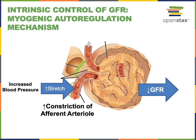The opposite occurs in response to low blood pressure: dilation of the afferent arteriole works to increase glomerular blood hydrostatic pressure, net filtration pressure, and GFR. In addition to stabilizing GFR, the myogenic autoregulation mechanism also protects the glomerular capillaries against the damaging effects of high blood pressure. If glomerular blood hydrostatic pressure became too high, it could damage the glomerular wall, so the myogenic autoregulation mechanism works to stabilize glomerular blood hydrostatic pressure.